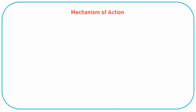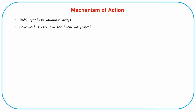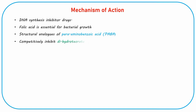Sulfonamides are DNA synthesis inhibitor drugs, thereby inhibiting growth of bacteria. Folic acid is essential for bacterial growth. The sulfonamides are structural analogs of para-aminobenzoic acid (PABA) and competitively inhibit the enzyme dihydropteroate synthetase, which facilitates PABA as a substrate for the synthesis of dihydrofolic acid.